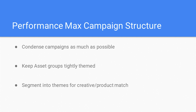For location targeting, after choosing your targeted locations, make sure to select presence — people in or regularly in your targeted locations. When setting up your asset groups, your messaging and creative assets should be tightly themed to the product or service within the group. If you don't provide a video, Google will make a terrible one for you — we highly recommend creating something basic using Canva, Premiere, or a similar tool. For e-commerce, something worth testing for Google Shopping specifically, especially if you've seen success with smart shopping historically, is to launch a Pmax campaign with no assets aside from your data feed. Keep in mind, you'll likely need to create a new asset group for this.